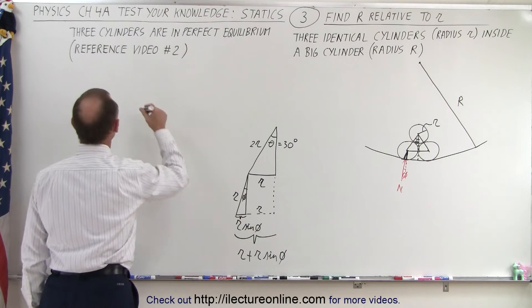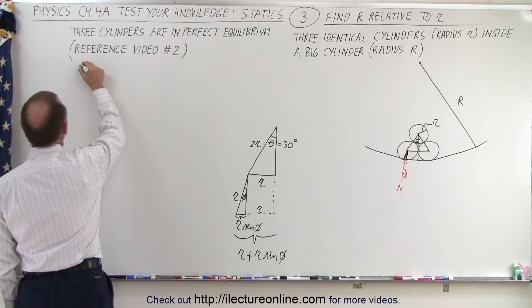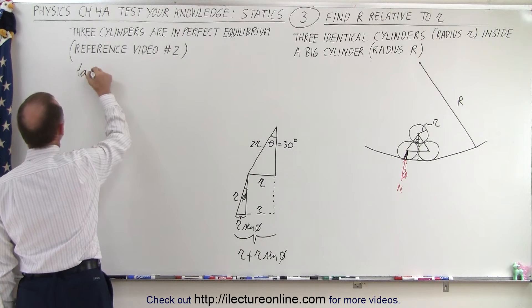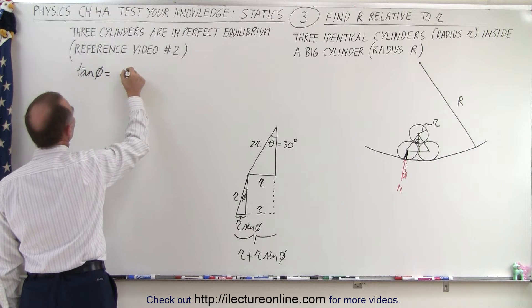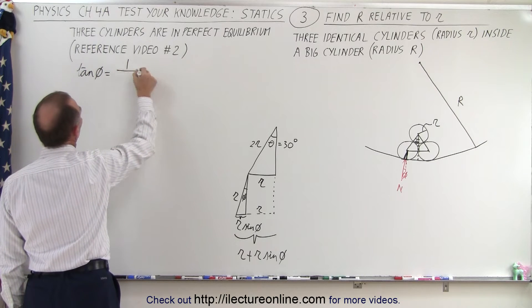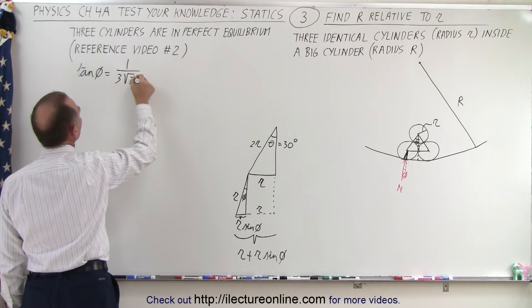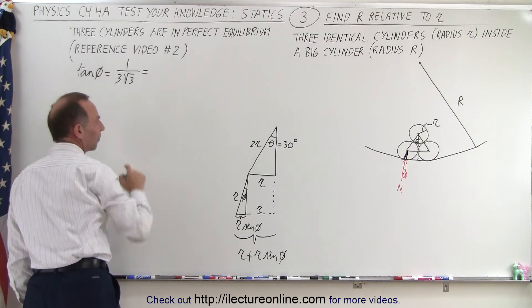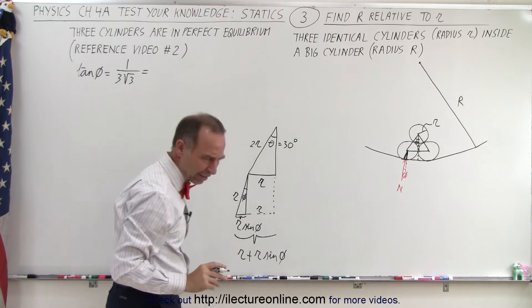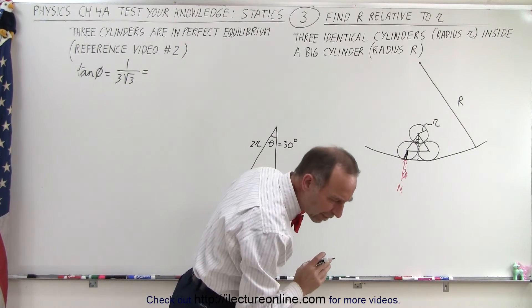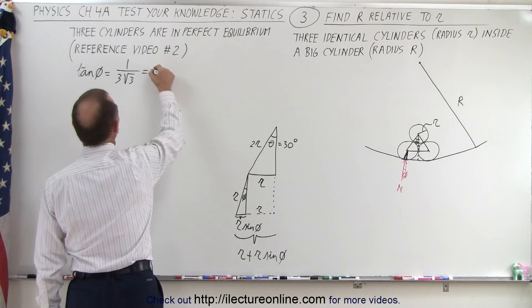Remember in the previous video we had that the tangent of phi was equal to 1 over 3 times the square root of 3, which ended up being — I've done my calculator — 10.89 degrees.